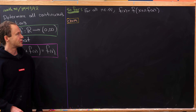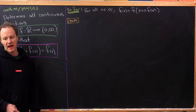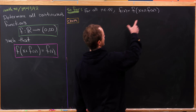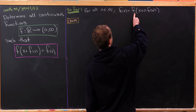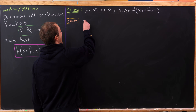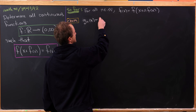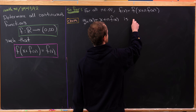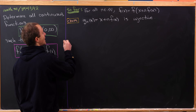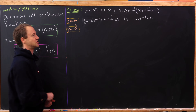We just proved that for all natural numbers n, f of x equals f of x plus n times f of x. The next step is to show that the function g sub n of x, defined as x plus n times f of x, is injective — in other words, a one-to-one function — for all natural numbers n.